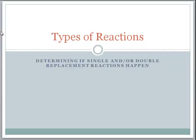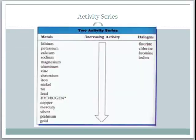What we're going to do is take a look at some more reactions — specifically how to determine if a single replacement or a double replacement reaction happens. While you're doing this, you might want to have your activity series and your solubility rules present. Let's get right into it.